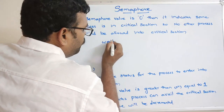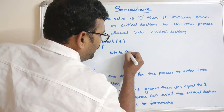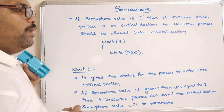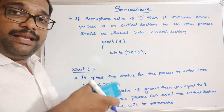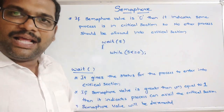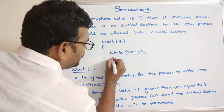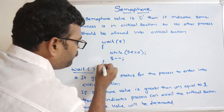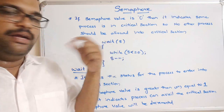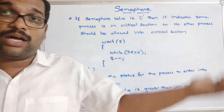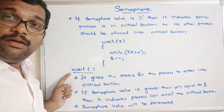If you write the wait procedure in code, it would be: wait(s) with a loop — while(s <= 0). This means the process stays inside this loop until s is greater than 0. Once s is greater than 0, the process exits the loop and s is decremented, indicating the resource has been allocated to that process.